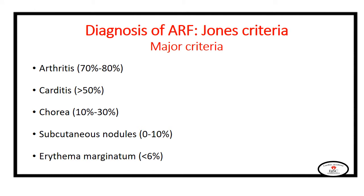On the other hand, carditis affects more than 50 percent of patients with acute rheumatic fever and may cause damage to the heart valves, leading to rheumatic heart disease. Chorea affects about 10 to 30 percent of acute rheumatic fever patients and is characterized by being a latent presentation, occurring about three months after throat infection with streptococcus. The less common major criteria are subcutaneous nodules and erythema marginatum.